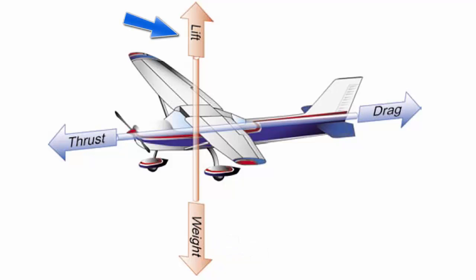Lift opposes the downward force of weight. Lift is produced by the aerodynamic effect of air acting on the wing. Lift acts perpendicular to the flight path through the wing's center of lift.